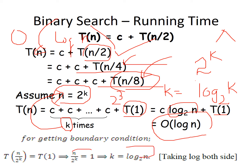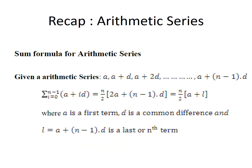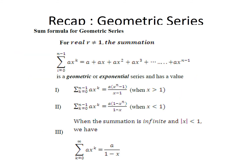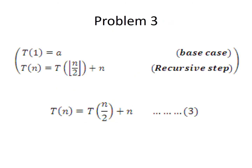That is how you solve recurrence relations using the iteration method — expand the series and use series formulas to calculate complexity. You can use this for asymptotic upper bound or Big-O notation. Recap the arithmetic series formula and apply it by expanding the recurrence relation to arrive at the time complexity. Apply the iteration method, keep expanding until the base case, then apply arithmetic or geometric series formulas.